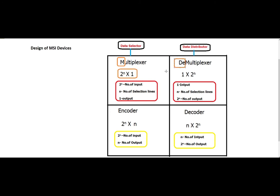The demultiplexer has just one number of input and 2 power n outputs, where n is the number of selection lines. In the multiplexer also, there are n number of selection lines.